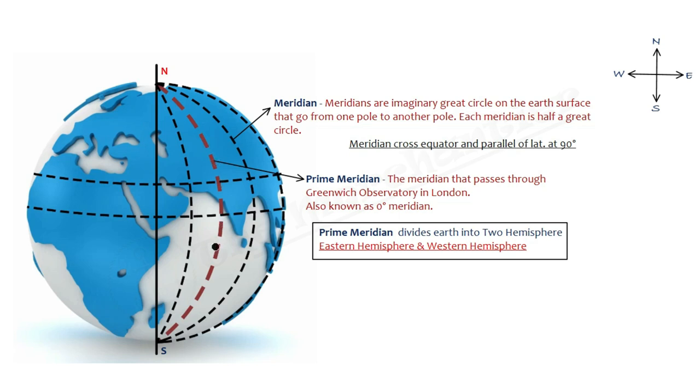Why do we call it prime meridian? Because it passes through Greenwich Observatory, which is in London, and the meridian's degree is 0 degrees. This is 0 degrees at its origin.